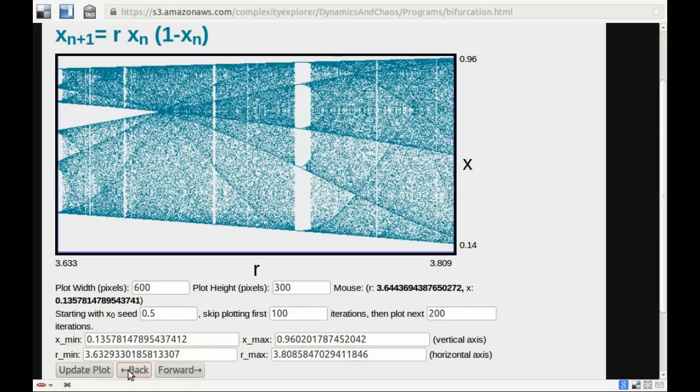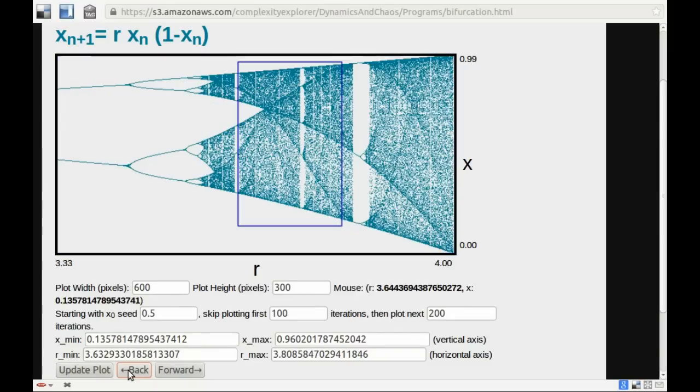We see periodic windows. If we look closely in regions that we think are pure chaotic regions in terms of their parameter value r, we see that they're stable regions of periodic behavior. We see lots and lots of period doubling transitions.